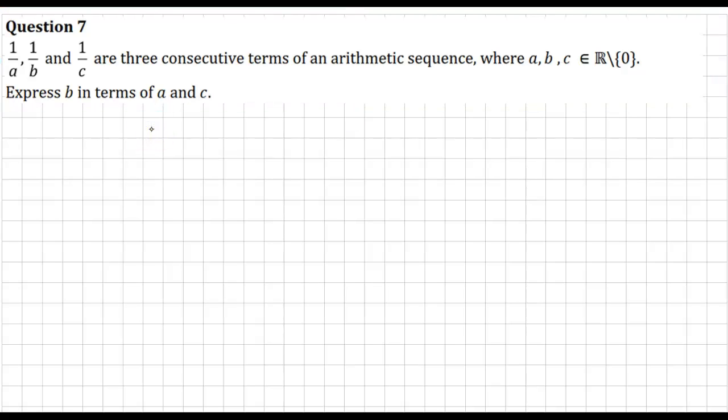Okay, so again, we're given three terms that are in an arithmetic sequence. a, b, c are elements of ℝ, and none of them are zero. So express b in terms of a and c.